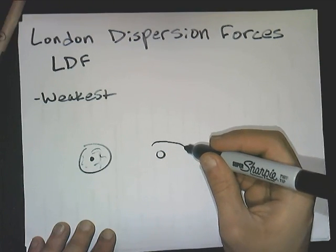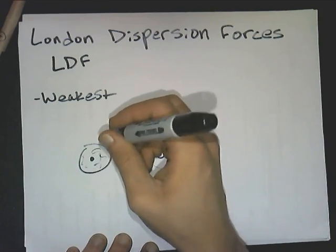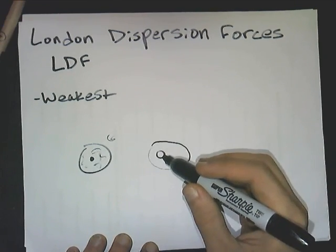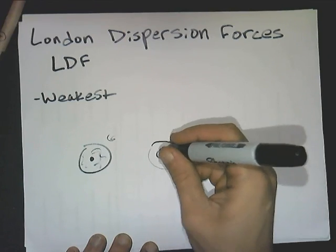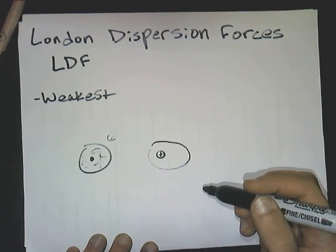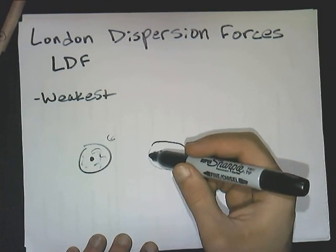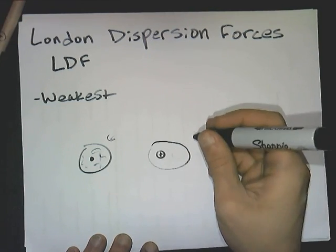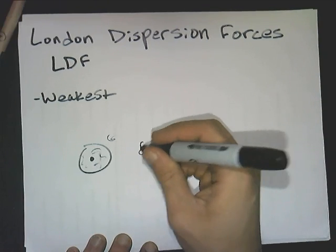It might get a little bit elongated out this way for just a brief period of time, and then it'll probably revert back. But during this brief period of time, we have positive charge in our nucleus and we've got our negative electron cloud. Since the electron cloud is bigger over here and smaller over here, we get a partial charge just for a brief period of time.